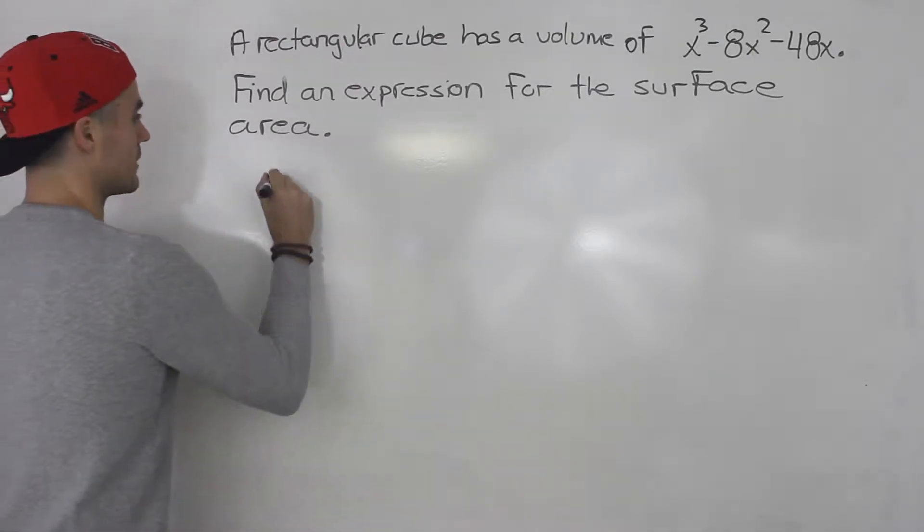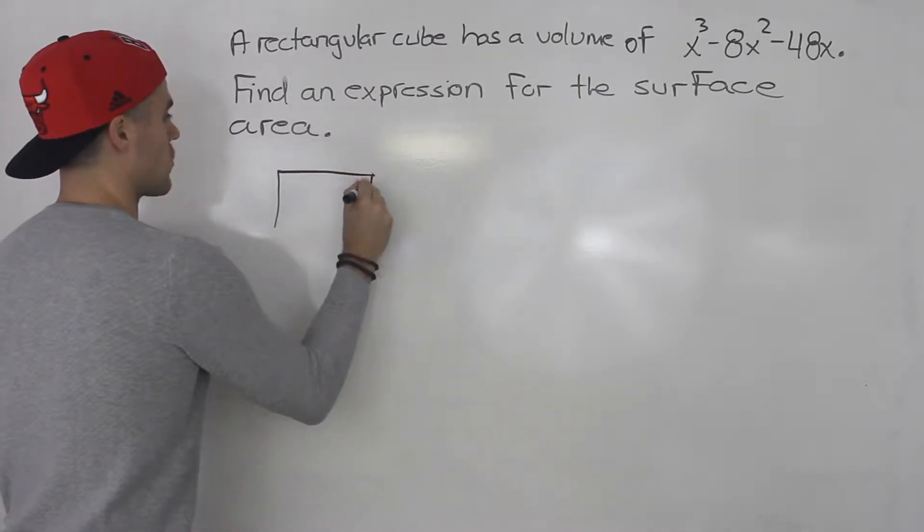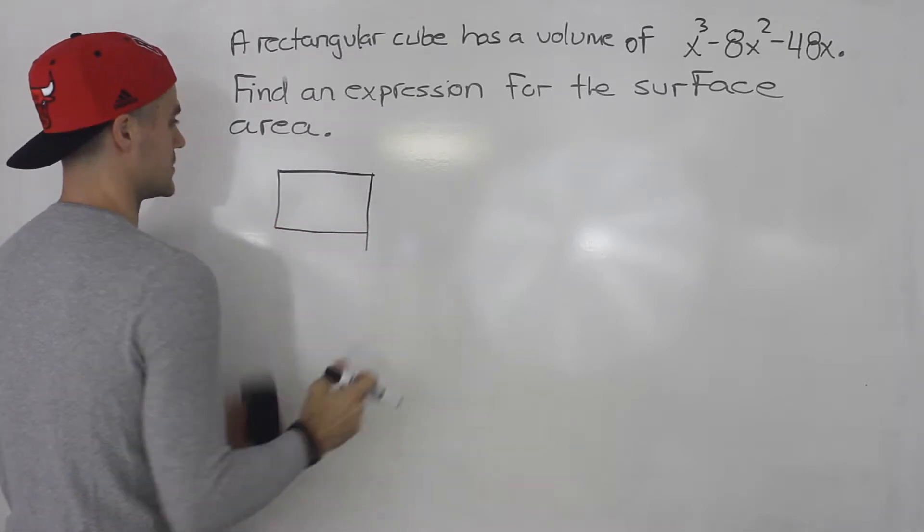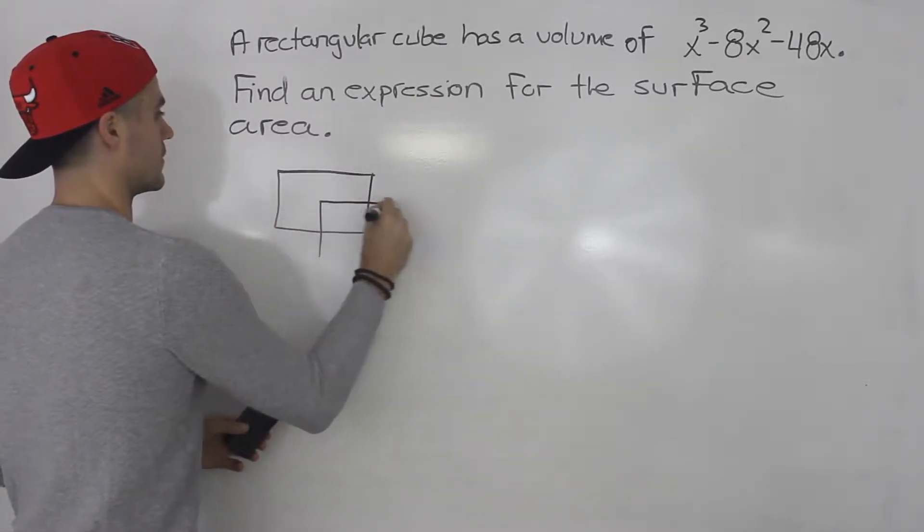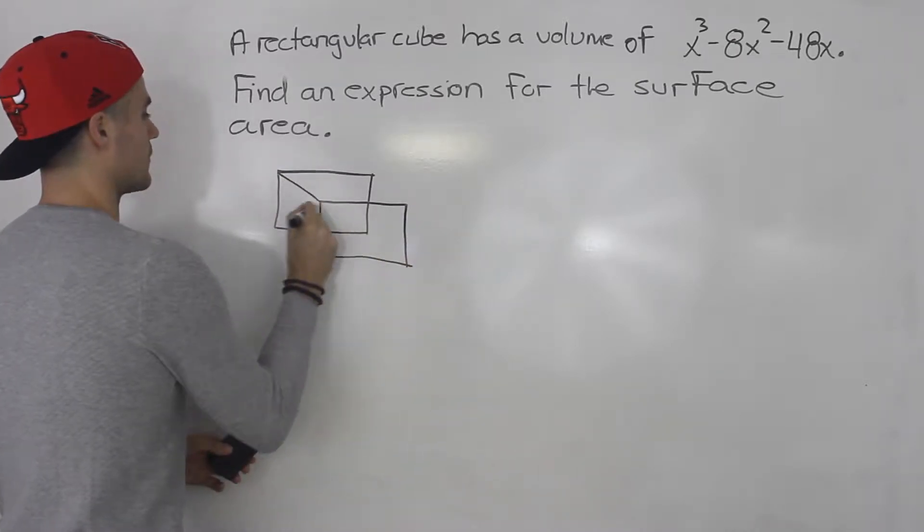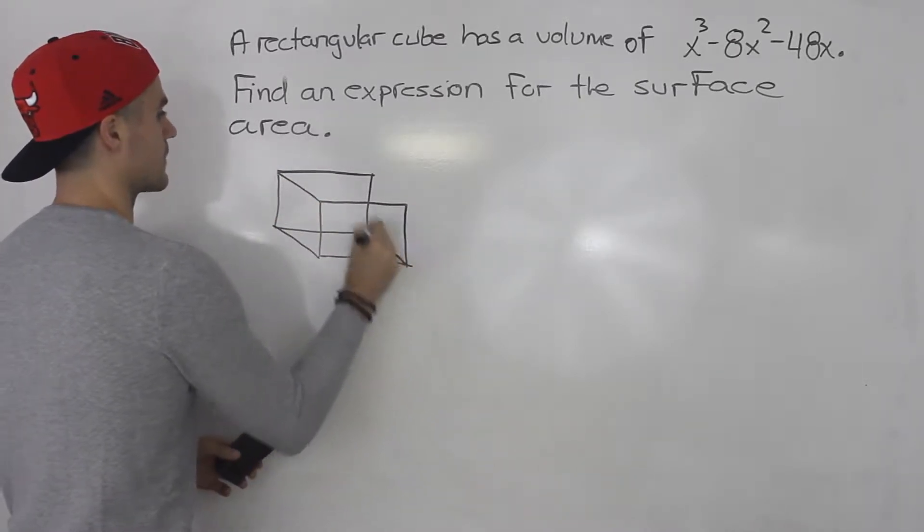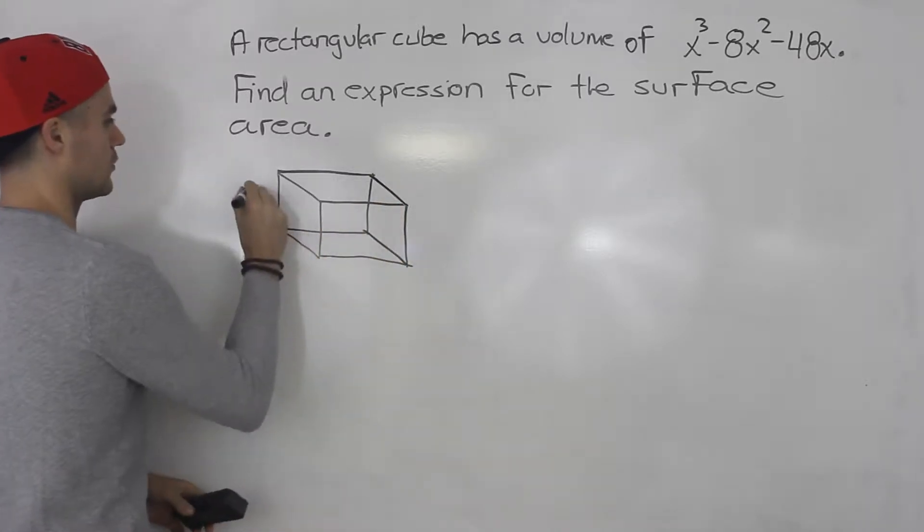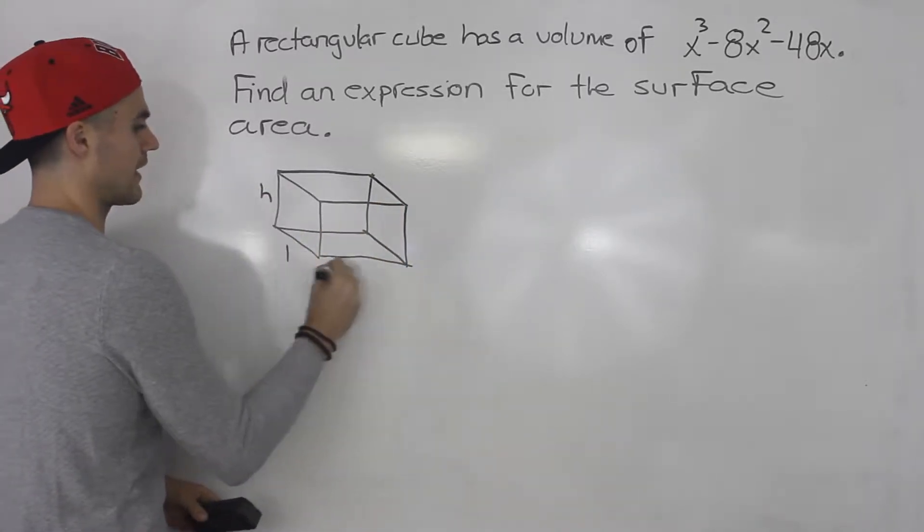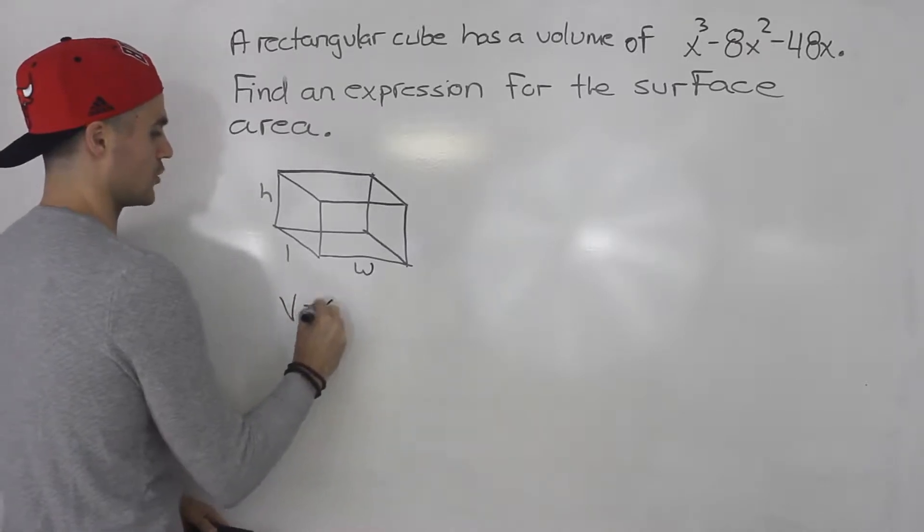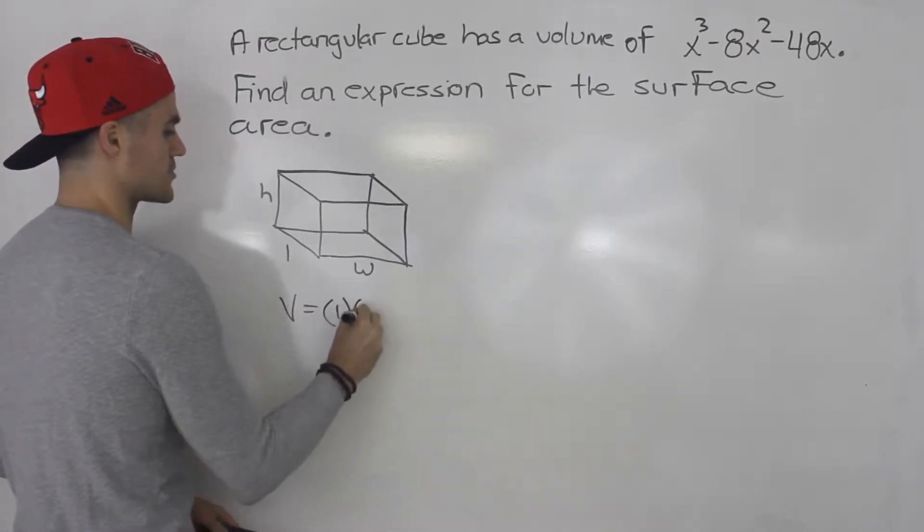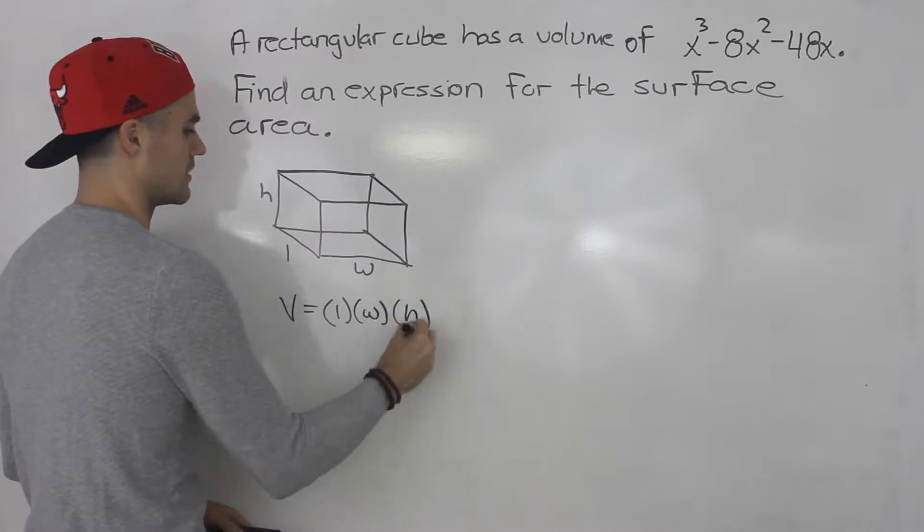So let's do a little review when we're dealing with a rectangular cube. Say we got this over here. Now if you remember, a cube has height, length, and width. And we know that the volume of a cube is basically length times width times height.